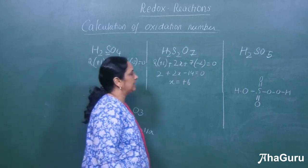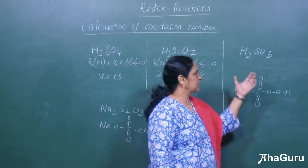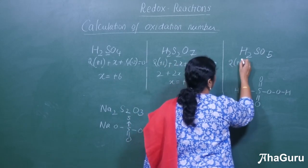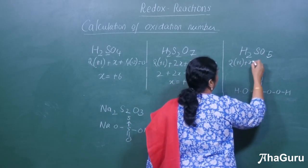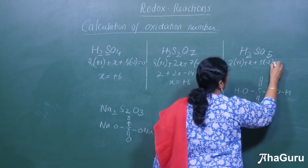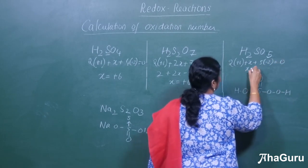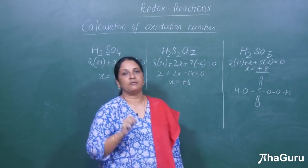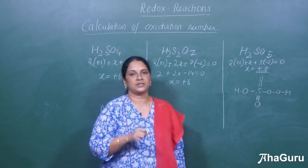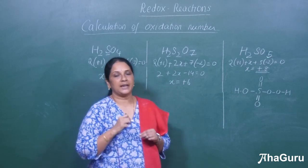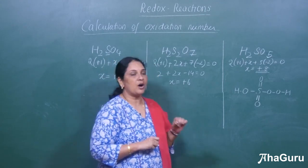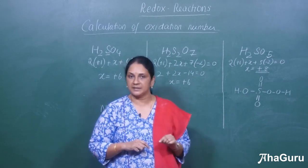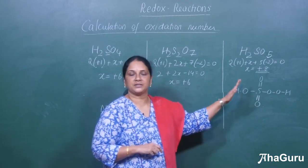Now let us look at H2SO5 using the conventional method: 2 × (+1) + x + 5 × (−2) = 0. This gives x = +8, which is not correct and not possible. The reason is that the oxidation number for any element cannot exceed its number of valence electrons. Sulfur has 6 valence electrons, so it cannot exceed +6. Getting +8 means the conventional oxidation state is wrong here.